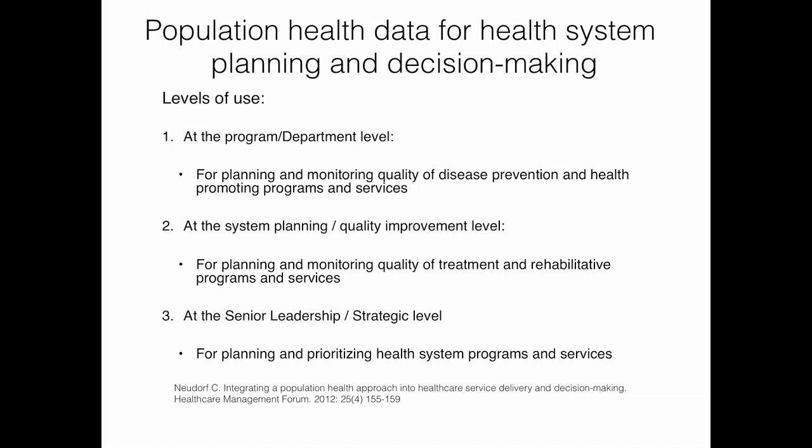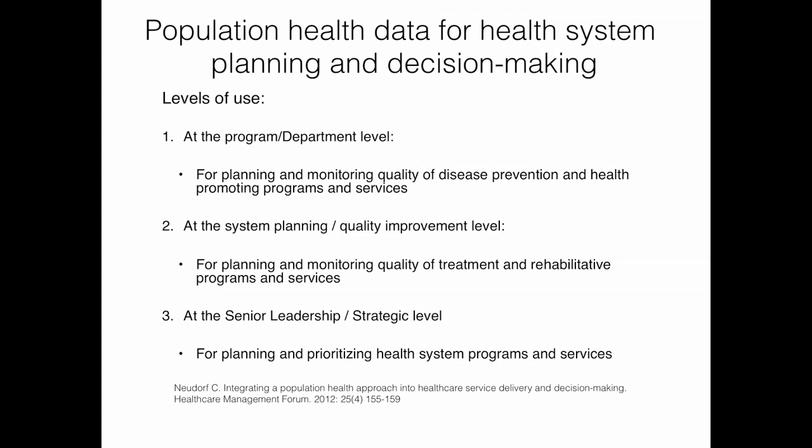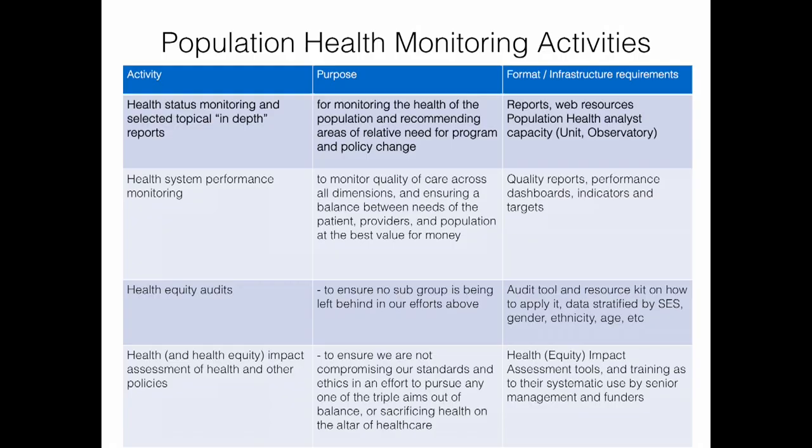I recently published a paper on how to integrate a population health approach into health system planning and decision-making, suggesting three levels of use. The first is at the basic program or departmental level — parts of the health system dealing almost exclusively in population health, like primary care and public health, where data is very useful for planning. At the next level, population health data is used for broader health system planning and quality improvement. And at the strategic level, it's used by senior leadership for planning and prioritizing health system programs and services overall.